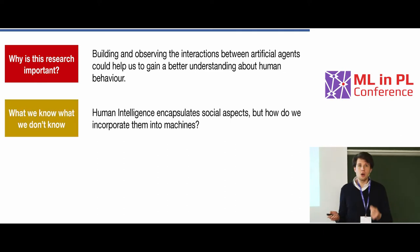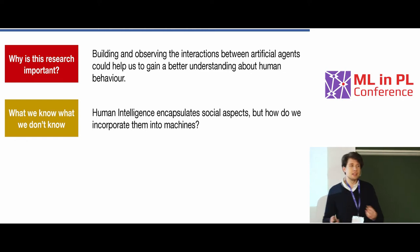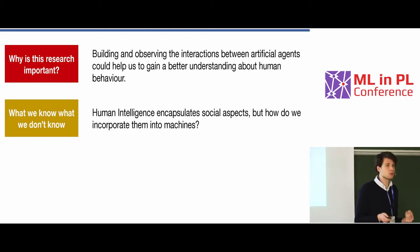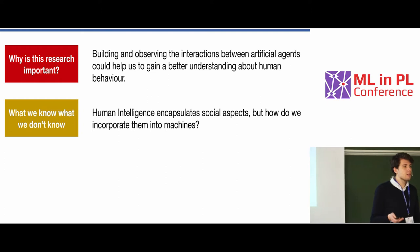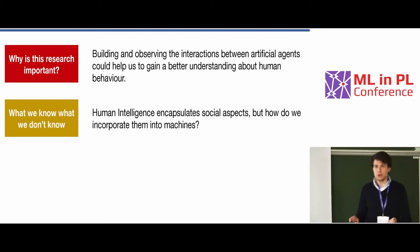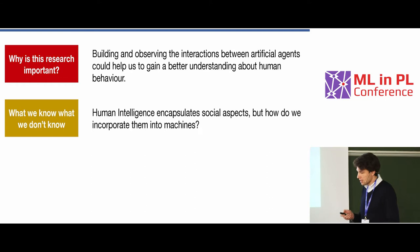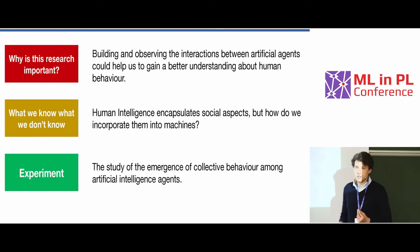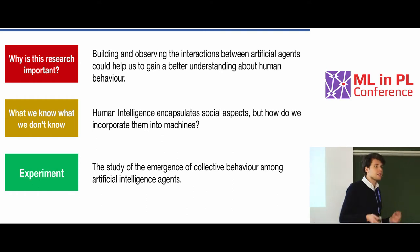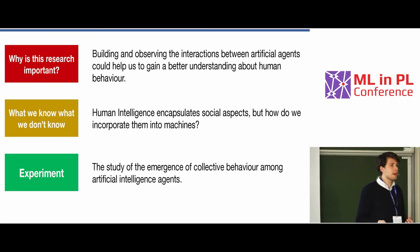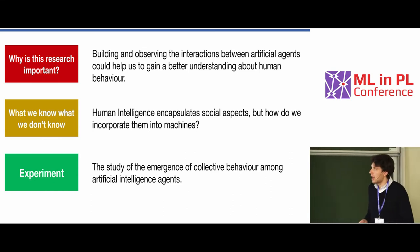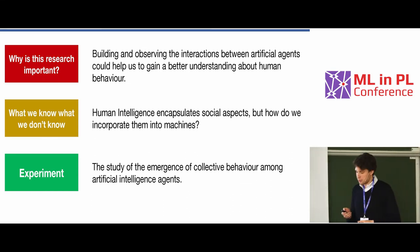We know that human intelligence in some way encapsulates social aspects. But how do we even infer it, and how do we use it properly? To study this, I investigate the emergence of collective behavior. I'm very interested in looking at how artificial agents go about learning to cooperate by themselves, and I do it by using multi-agent reinforcement learning.